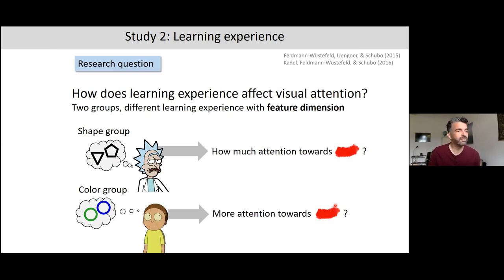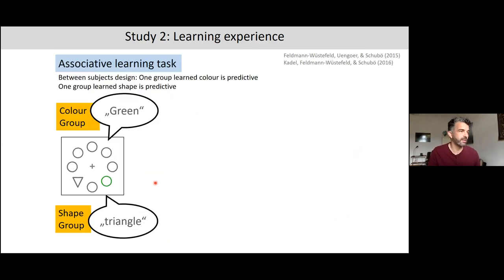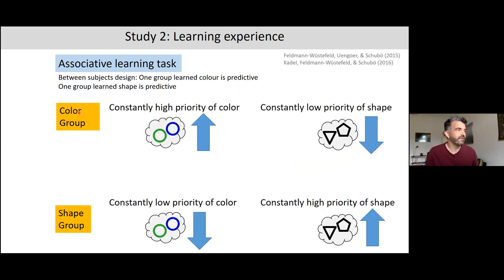For both groups, red was irrelevant, but for one group color was the relevant feature dimension and for the other shape was relevant. In the learning task, both groups saw the same displays but reported different things: the color group reported green or blue, the shape group reported triangle or pentagon. The question was whether having a constantly high priority for color versus shape would affect attention deployment in a subsequent visual search task.